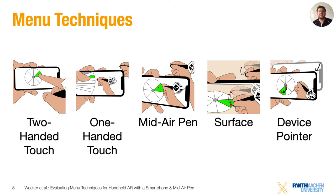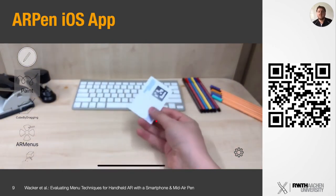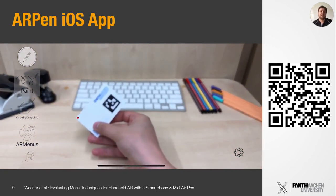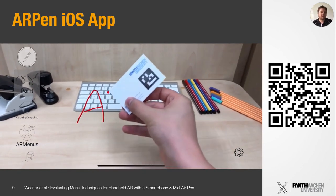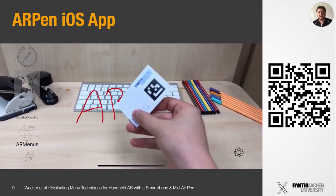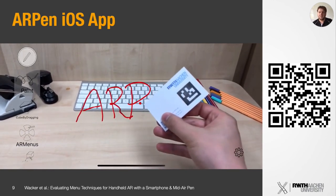But that does not mean that this technique should never be used at all. All techniques achieved high success rates, so none should be immediately discarded. Our results provide a starting point for interaction designers to pick a menu technique for their application. If you want to test that out, you can download the iOS app of the ARPen — you only have to print out the marker to be able to interact in midair. The project is also available on GitHub so you can develop your own interaction techniques.